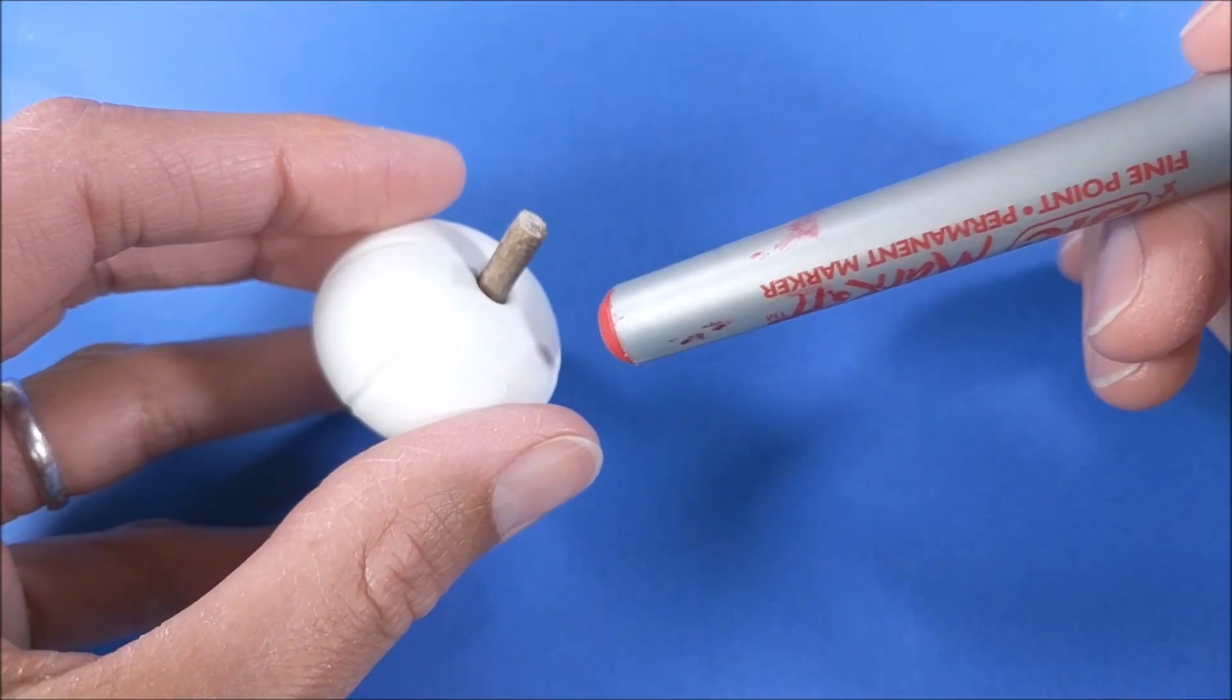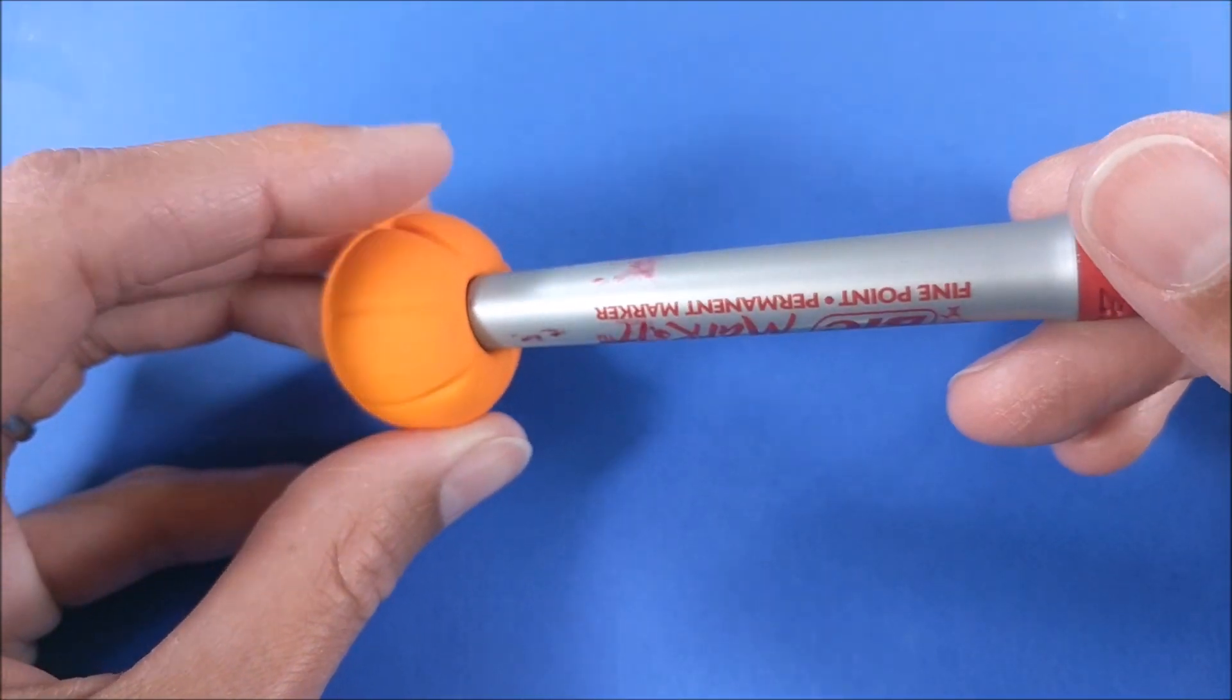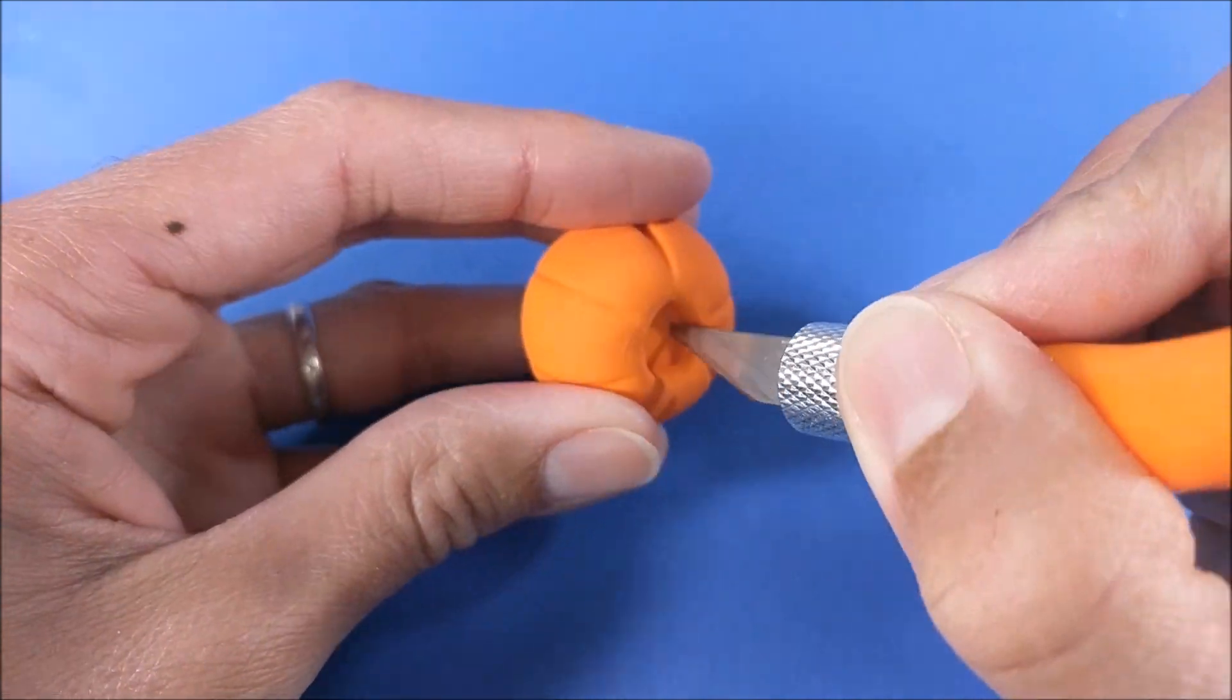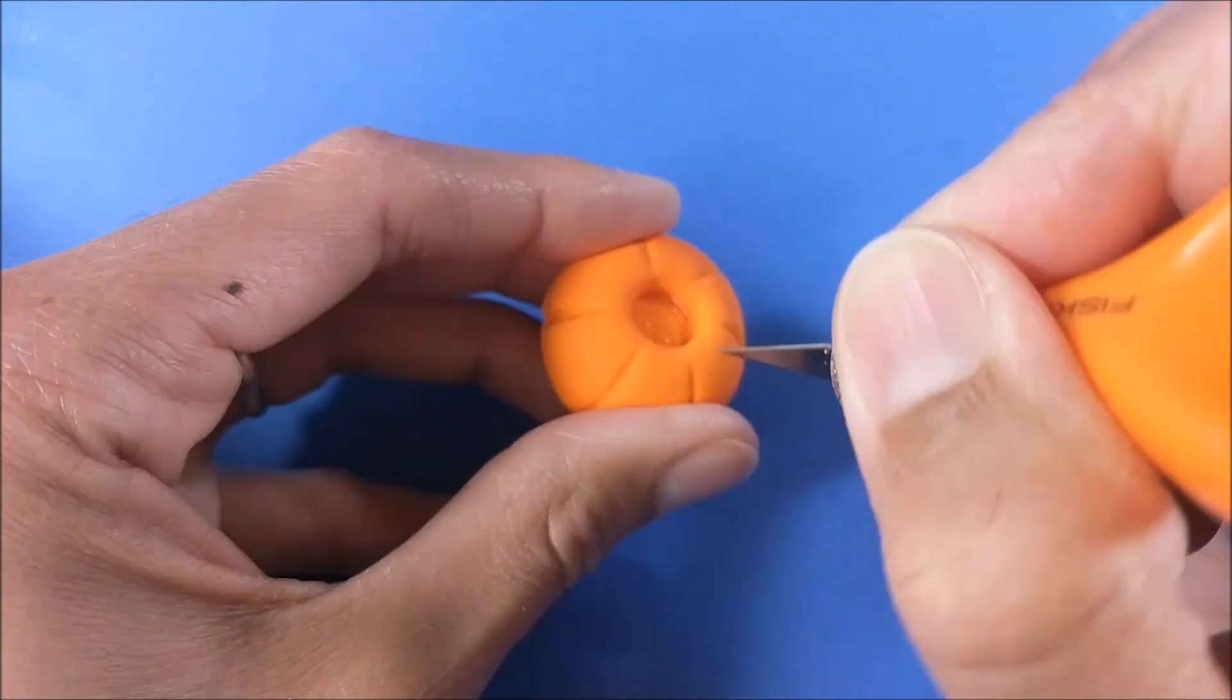Alternatively, if you wanted what looked like a carved pumpkin, instead of doing a stick you could do an indentation before the model magic has dried. But you'd probably want it deeper than what I've done here, which is why I decided to carve it out.